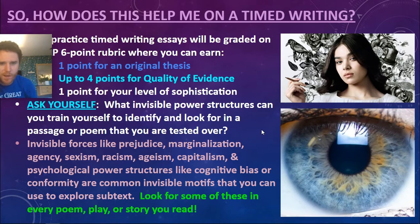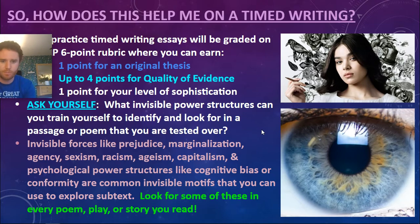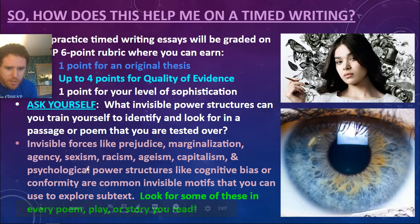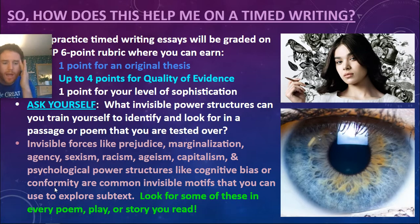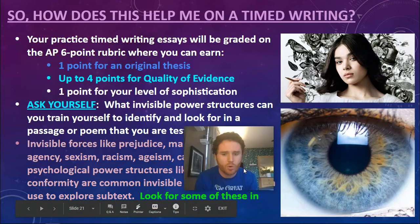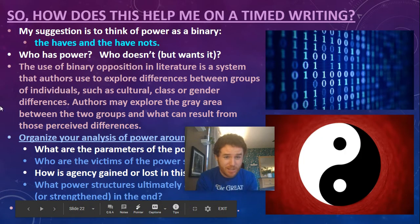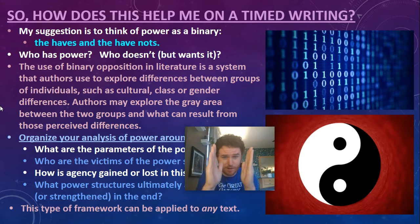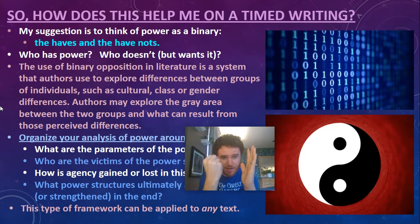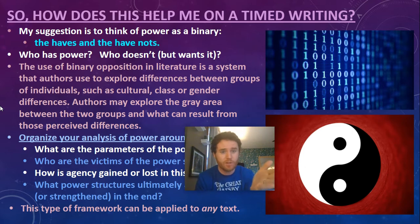Ask yourself: what invisible power structures can you train yourself to identify and look for in a passage or poem? A reminder — you've got marginalization, prejudice, sexism, ageism, cognitive bias, conformity. Look for some of these in every poem, play, or story that you read. My suggestion is to think of power as a binary — the haves and the have-nots. In computer language, binary is ones and zeros. The light switch is on or off. You have it or you don't. Who has power? Who doesn't, but wants it?